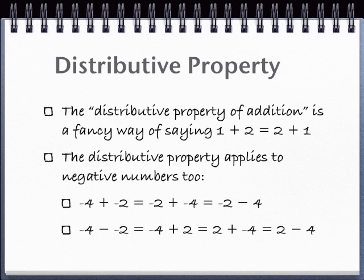Now, negative 4 minus negative 2 is the same as negative 4 plus the absolute value of negative 2, or negative 4 plus 2.